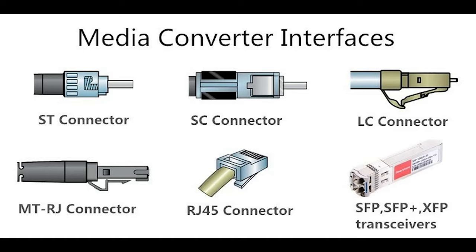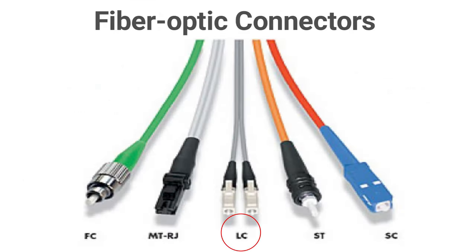Let's talk fiber first. We have the local connector, which has a flange on top for a secure connection. Then we have the straight tip connector, which uses a half-twist bayonet type of lock.